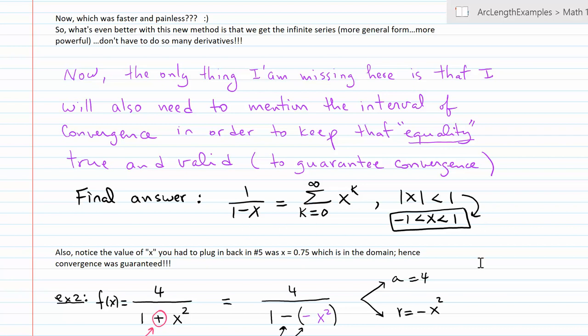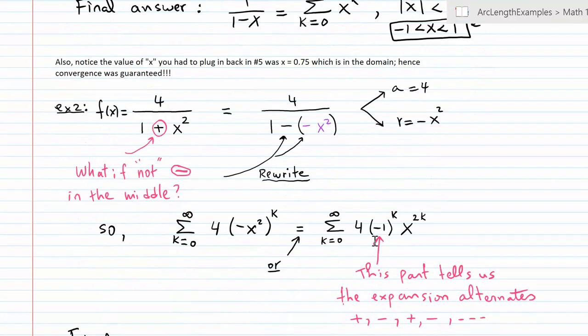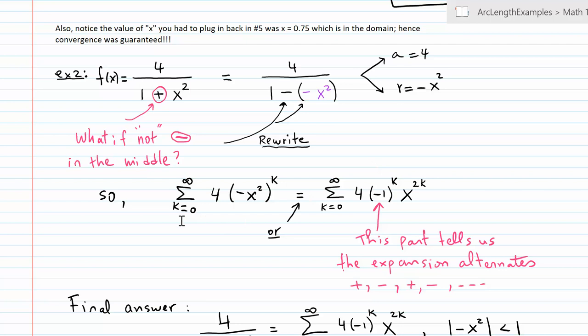So now I'm going to pick another example where let's say the sign in the middle is not - a plus. Well, that's going to be an easy fix; we could always rewrite a plus as a double negative, which now makes my r whatever you see in the parentheses: negative x squared. My a is going to be 4 still in this case at the top here, and I'm ready to start. So I'm going to the summation starting from 0 to infinity, writing the a outside of the parentheses; r, which is negative x squared, goes inside of the parentheses - so parentheses are very important here - raised to the power of k.